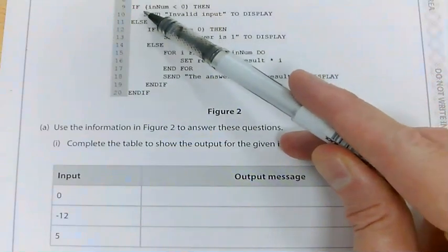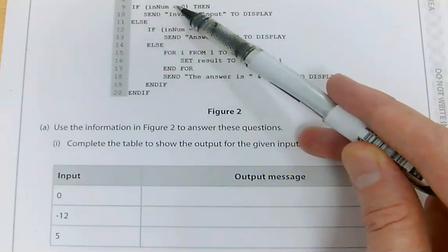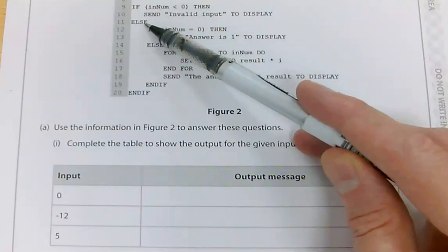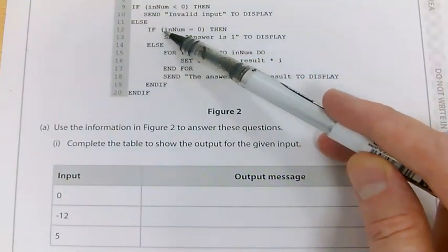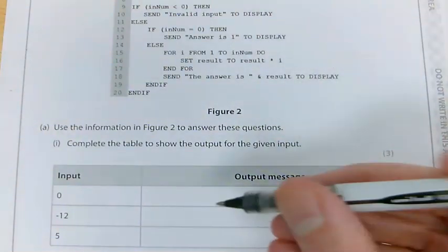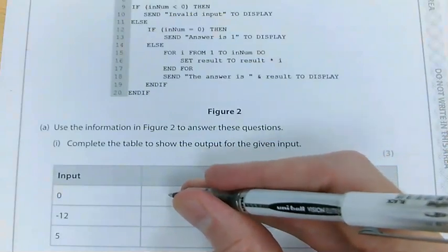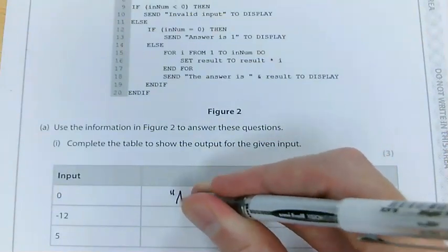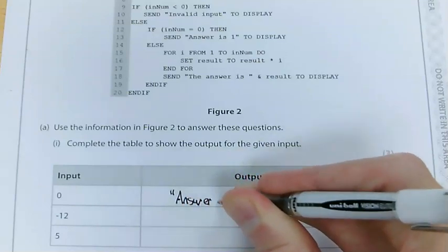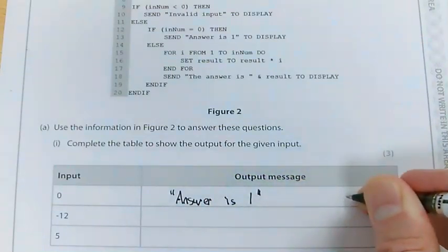So down here, if inNum, that's 0 to start with, is less than 0, then I can ignore that because 0 isn't less than 0. Else, if inNum equals 0, then send answer is 1 to display. So here, because inNum is 0, I can write down there, I'm just going to put in quotation marks, answer is 1. That's going to be my output.